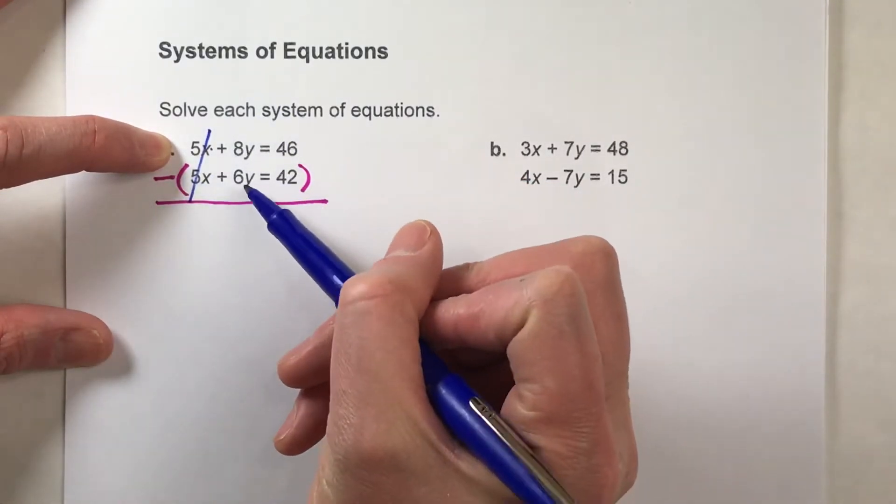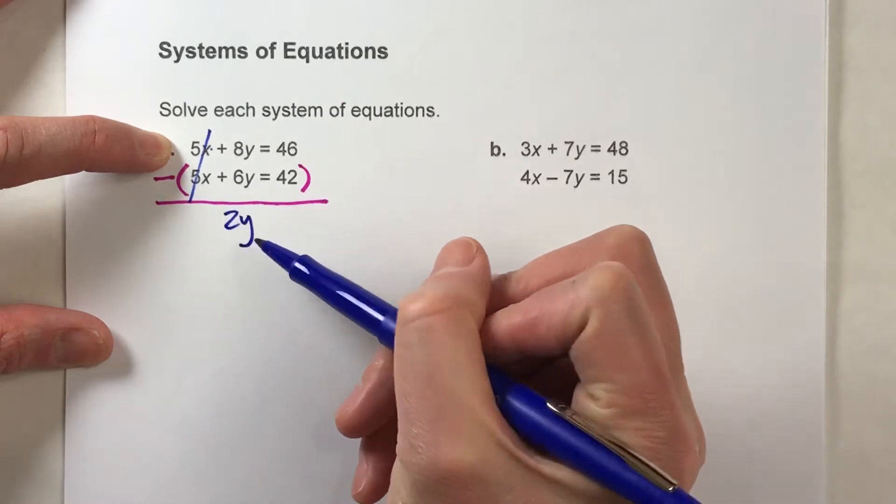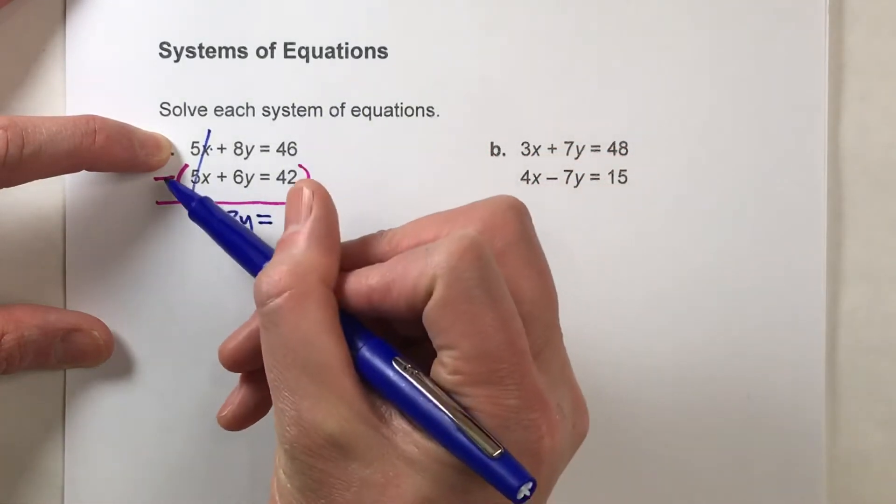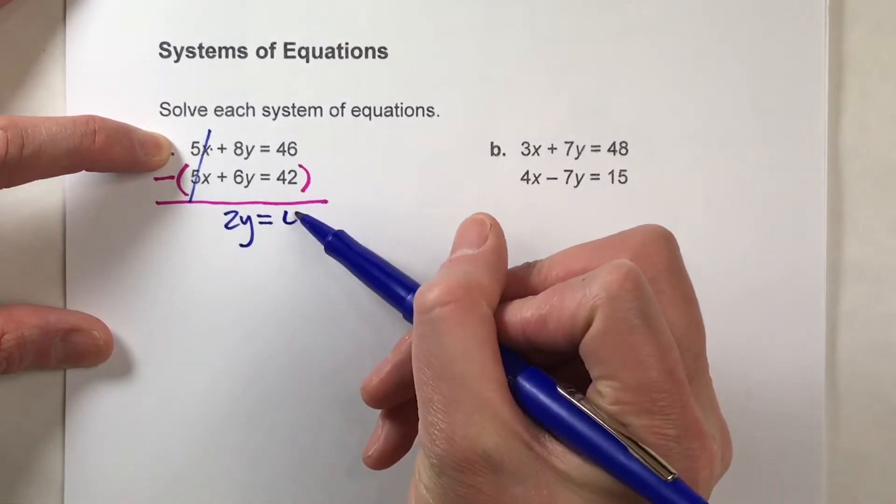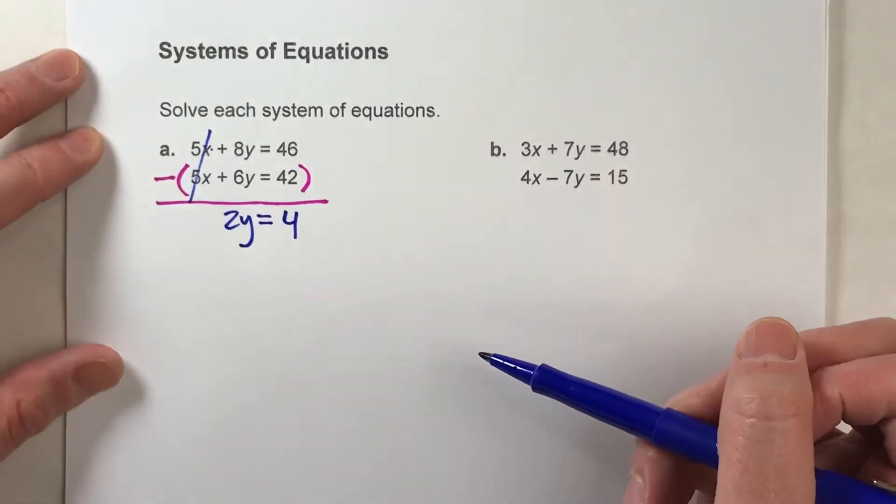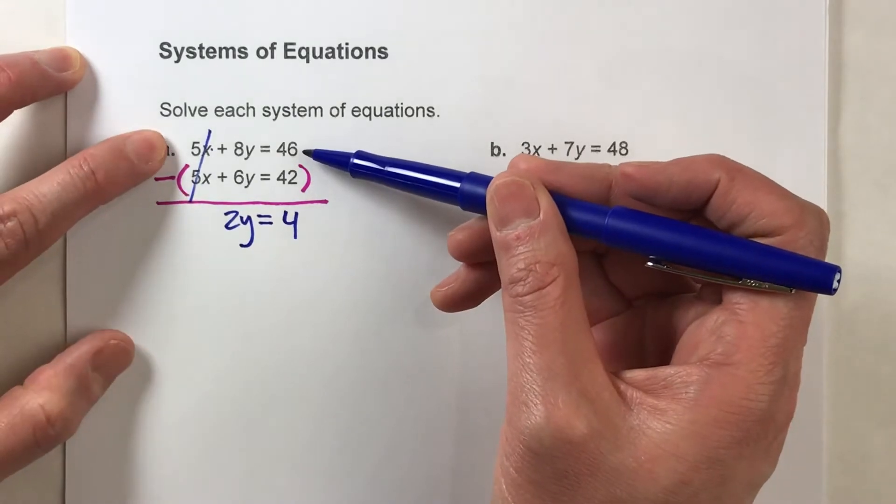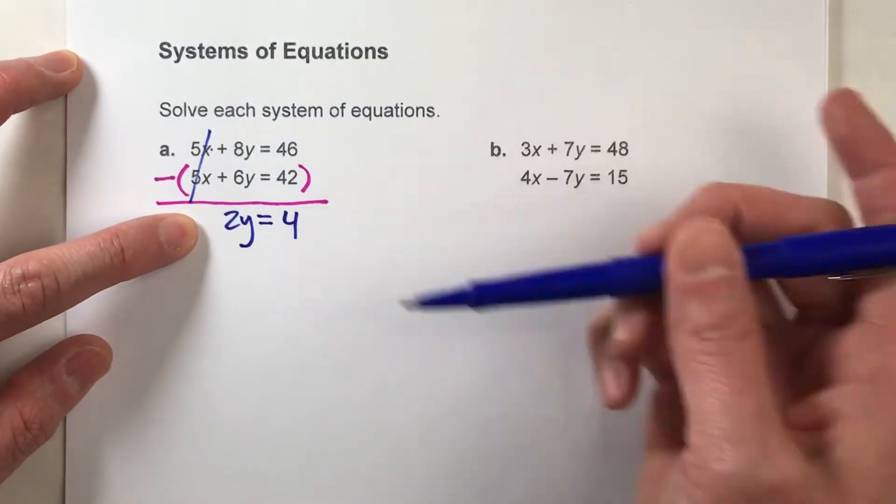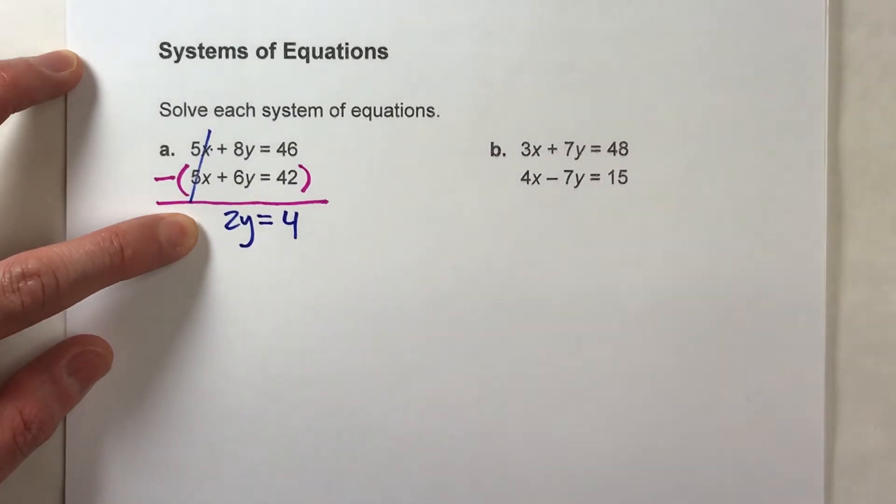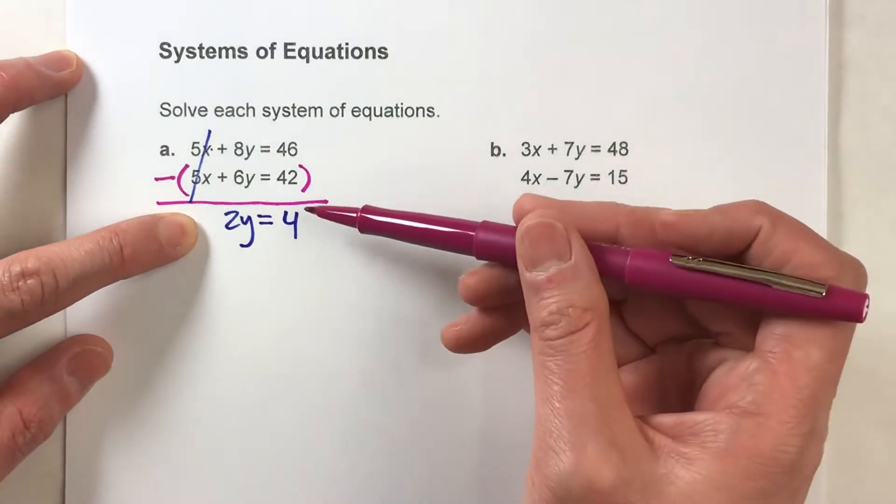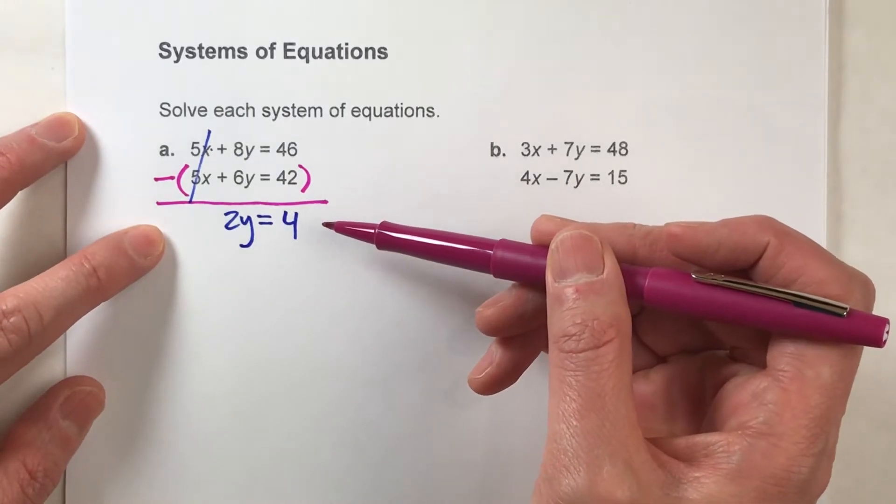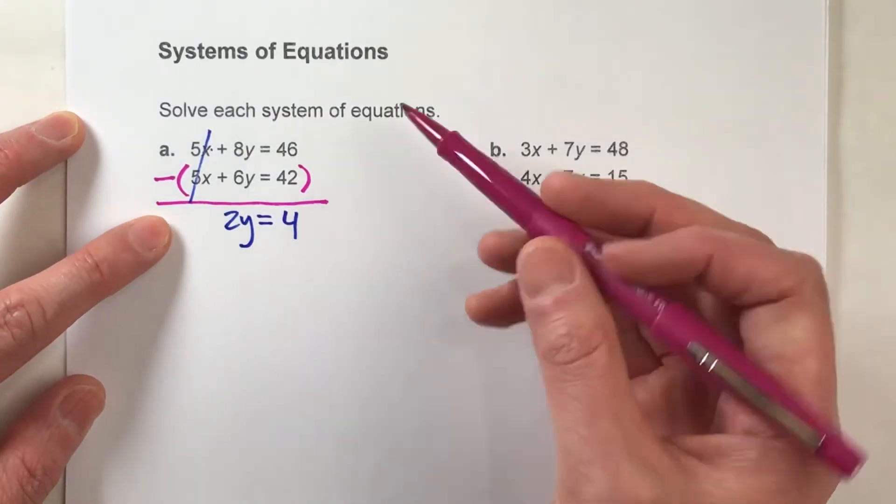8y's, take away 6y's, gives me 2y's. My equals drops down. And 46, take away 42, gives me 4. So you see, by subtracting the second equation from the first, all I'm left with as an equation is 2y equals 4. And that's an equation we can easily solve. And we've completely eliminated x from the equation. That's why it's called the elimination method.